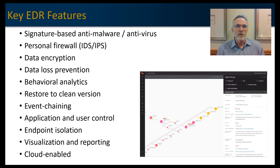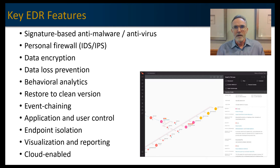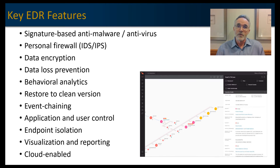Behavioral analytics are really core to the EDR value proposition. The AI and machine learning services that EDR provides are second to none in identifying silent threats that can get through other defensive measures. We also want the ability to restore to a clean version of an endpoint. And event chaining is critical for the Security Operations Center to be able to remediate, hunt down threats, and ensure the rest of the organization is protected.